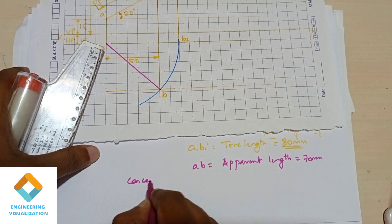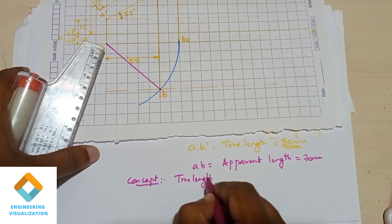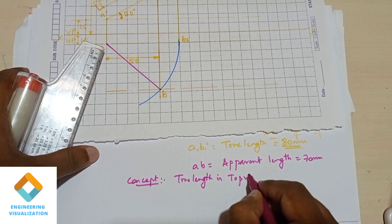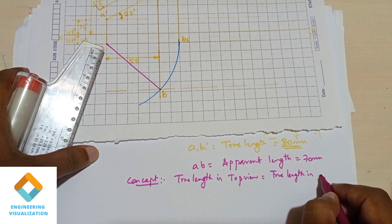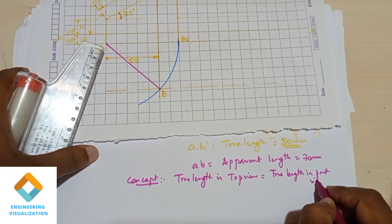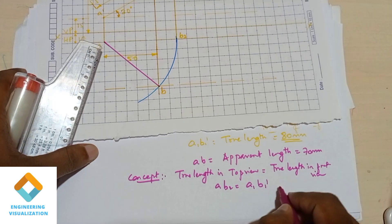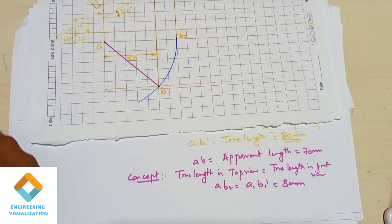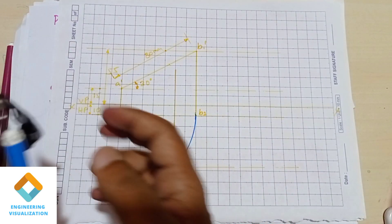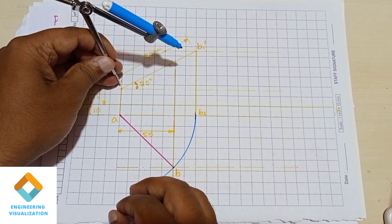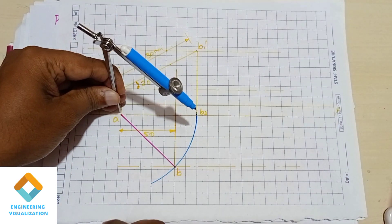We have the concept that true length in front view is equal to true length in top view, because true lengths are the same in the projection of lines. So true length in top view will be exactly equal to true length in front view. We already got A dash B1 dash as 80 mm, so A B2 equals A dash B1 dash, which is 80 mm. We measure 80 mm with the compass and cut the arc. So A dash B1 dash equals A B2 — we measure this length and cut the arc.